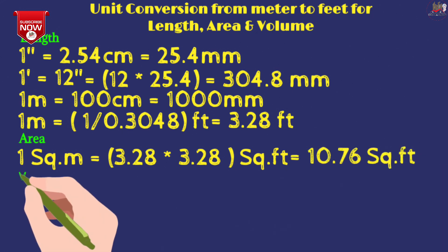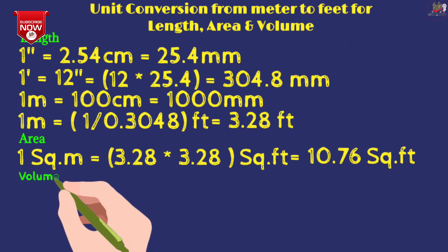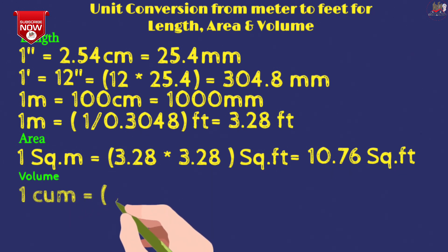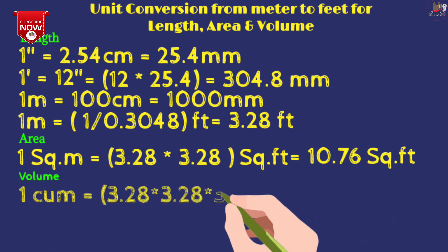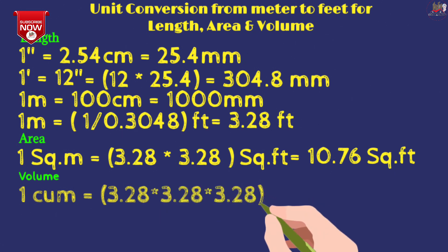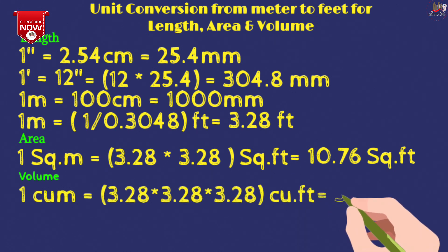If we talk about volume, 1 cubic meter or cumec is length, width, and height, which means 3.28 times 3.28 times 3.28. This is 35.28 cubic feet.